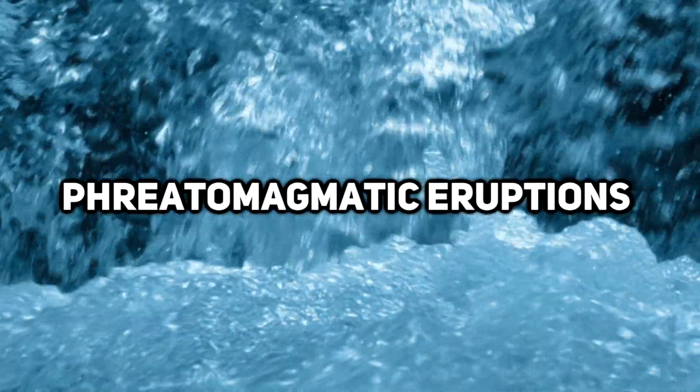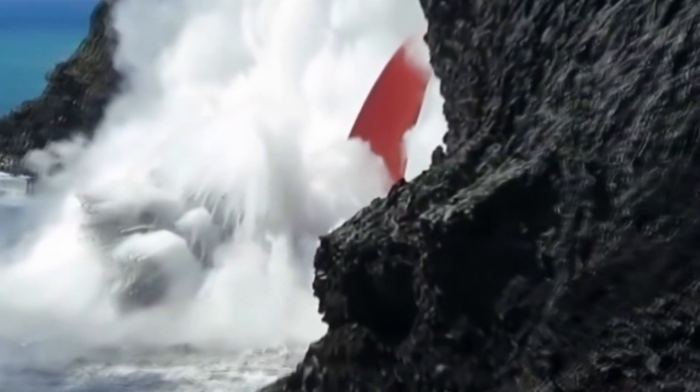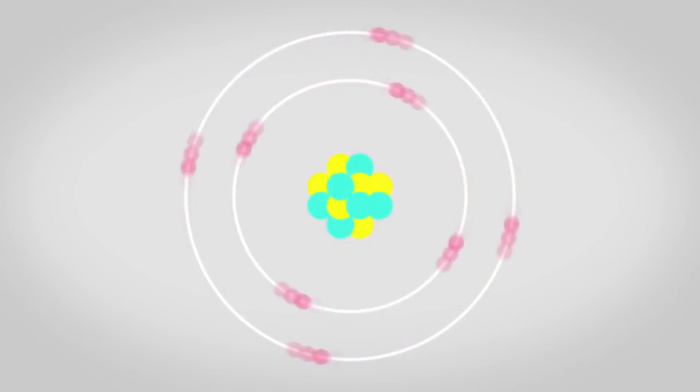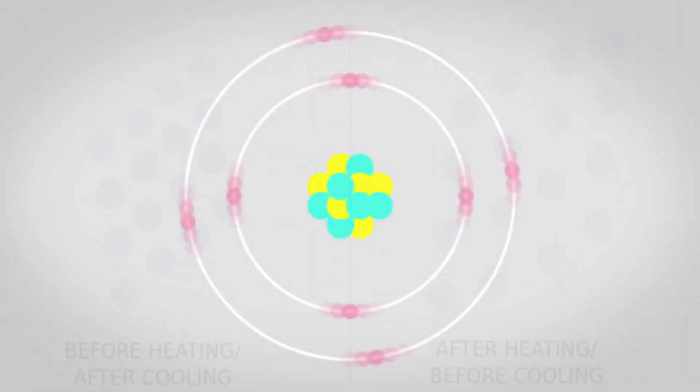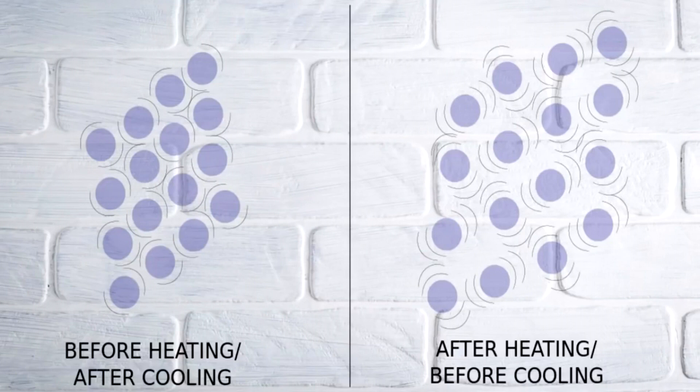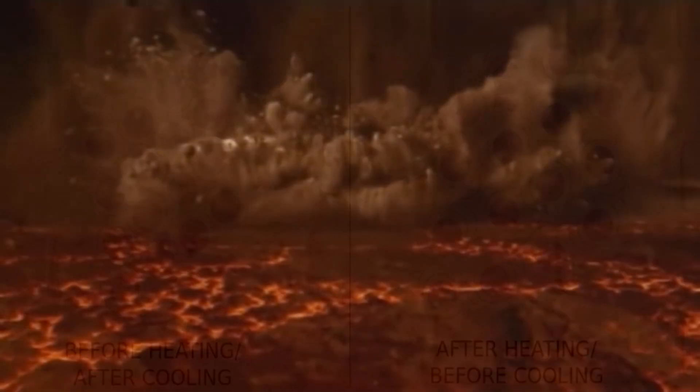Phreatomagmatic eruptions occur as a result of a direct interaction between magma and water. When water comes into contact with magma, it is instantly superheated. The sudden large difference in temperature between the two causes explosive and violent water-magma interactions. Unlike the function of thermal expansion that is utilized by the magmatic class, phreatomagmatic eruptions rely instead on thermal contraction, which is the shrinking of substances as they cool, meaning the length, size, and volume of a substance decreases as it gets cooled.